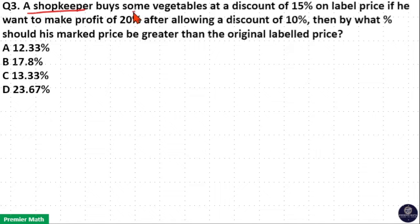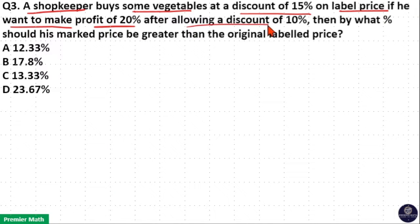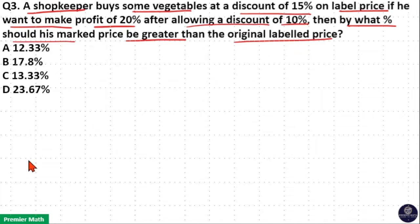A shopkeeper buys some vegetables at a discount of 15% on the label price. If he wants to make a profit of 20% after allowing a discount of 10%, then by what percentage should his marked price be greater than the original label price?